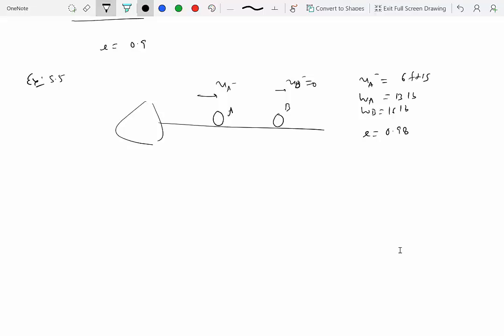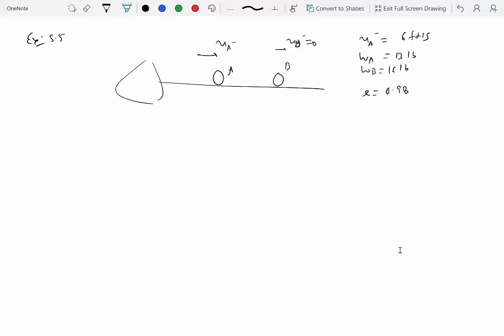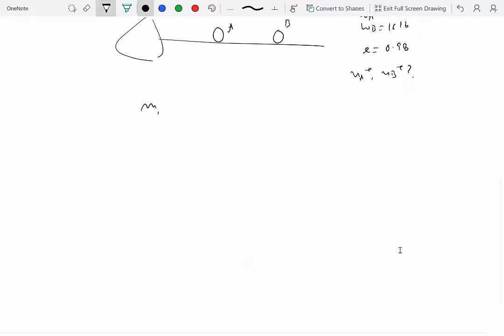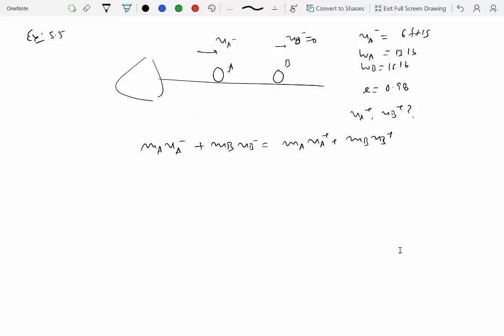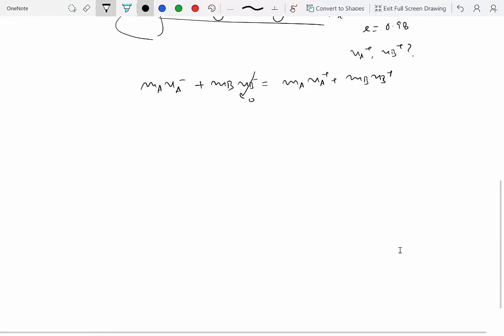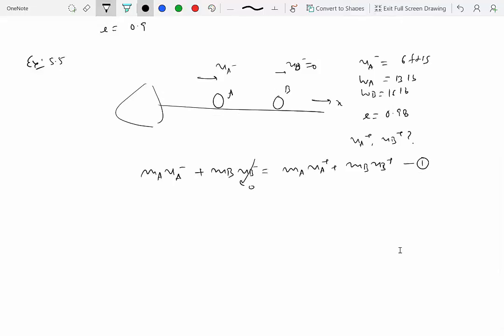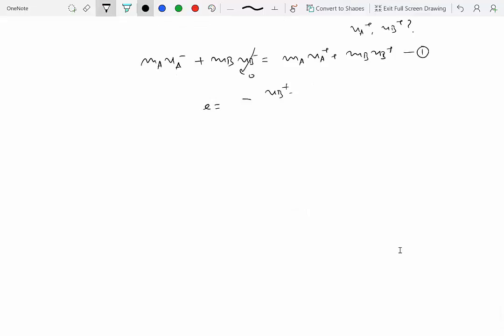They have identical diameters and the coefficient of restitution is 0.98, so E is very close to 1, meaning we shouldn't see much loss of kinetic energy. Determine the post-impact velocities VA plus and VB plus. Drawing the free body diagram, there is no external force at impact if we neglect friction, which means momentum is conserved. So MA VA minus plus MB VB minus equals MA VA plus plus MB VB plus. This is a direct central impact with velocities along one direction.